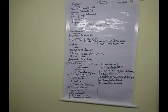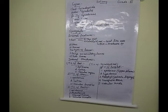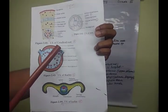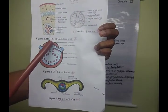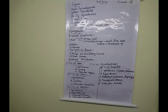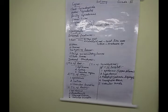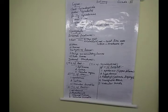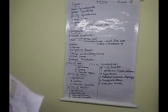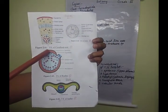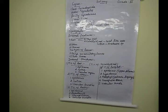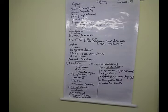Epidermis is the outermost region, covered by a very thick cuticle. The next layer is the hypodermis, shown in brown color. In the hypodermis, sclerenchyma tissues are present. On the adaxial side (upper side), there are two rows of sclerenchyma tissues, and on the abaxial side (lower side), there are many layers of sclerenchymatous cells.